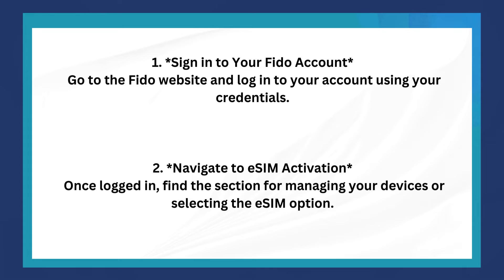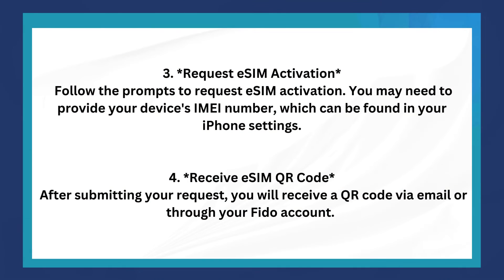The third step is to request eSIM activation. Follow the prompts to request eSIM activation. You may need to provide your device's IMEI number, which can be found in your iPhone settings.